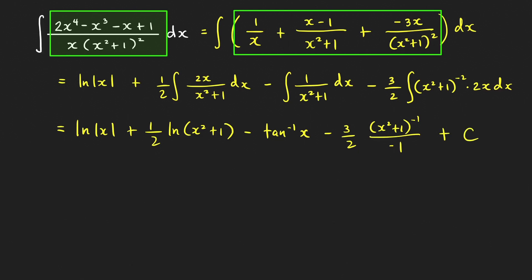We can simplify the final answer by writing the last term as plus 3 over 2(x² + 1), plus the constant C. I hope that you learned something new in this video. Thanks for watching, and hope to see you next time.